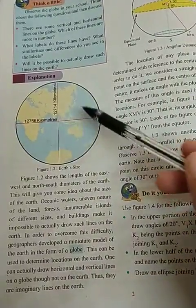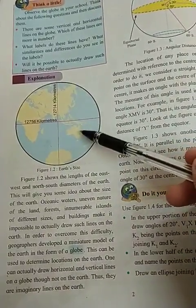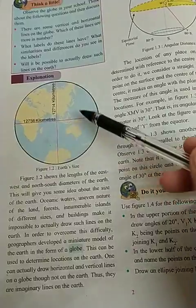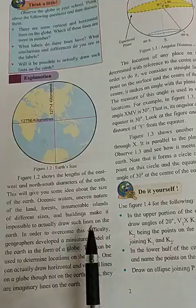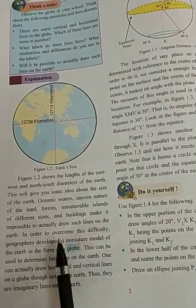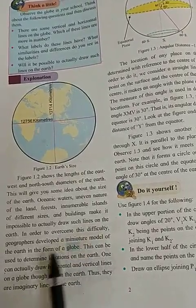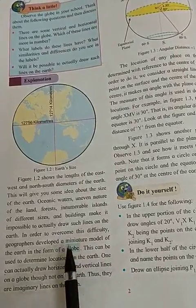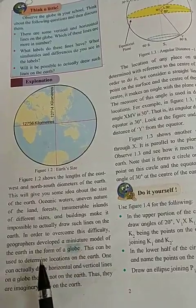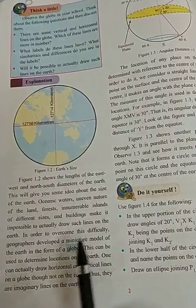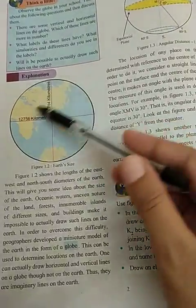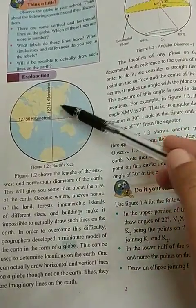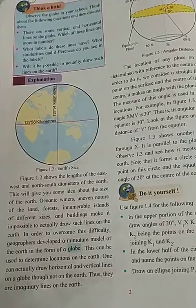That means the forestry area and the sandy area of the land — it is not possible to show on this map. The gratitude area actually cannot be shown this way. In order to overcome this difficulty, geographers developed a miniature model of the earth in the form of a globe. So what they have done is created a miniature model of the earth, which we call a globe.